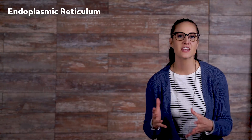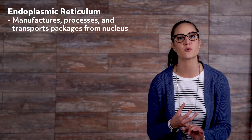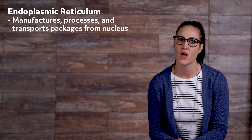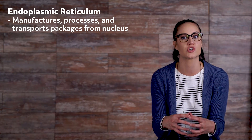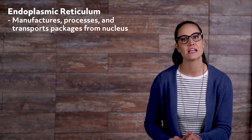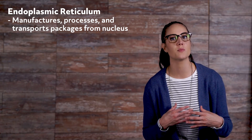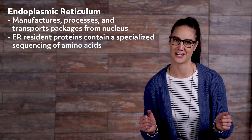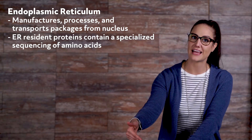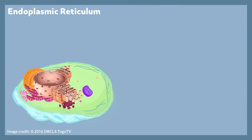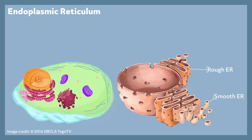Endoplasmic reticulum. The endoplasmic reticulum is often referred to as the manufacturing center of the cell, because it functions to manufacture, process, and transport packages from the nucleus to be utilized within the cell. Almost everything within the lumen of the ER is transient — only there for a short time before being transported out. However, the ER needs some protein workers called endoplasmic reticulum resident proteins, which contain a specialized amino acid sequence that the ER recognizes so it can retain them. There are two different types of endoplasmic reticulum: rough and smooth.